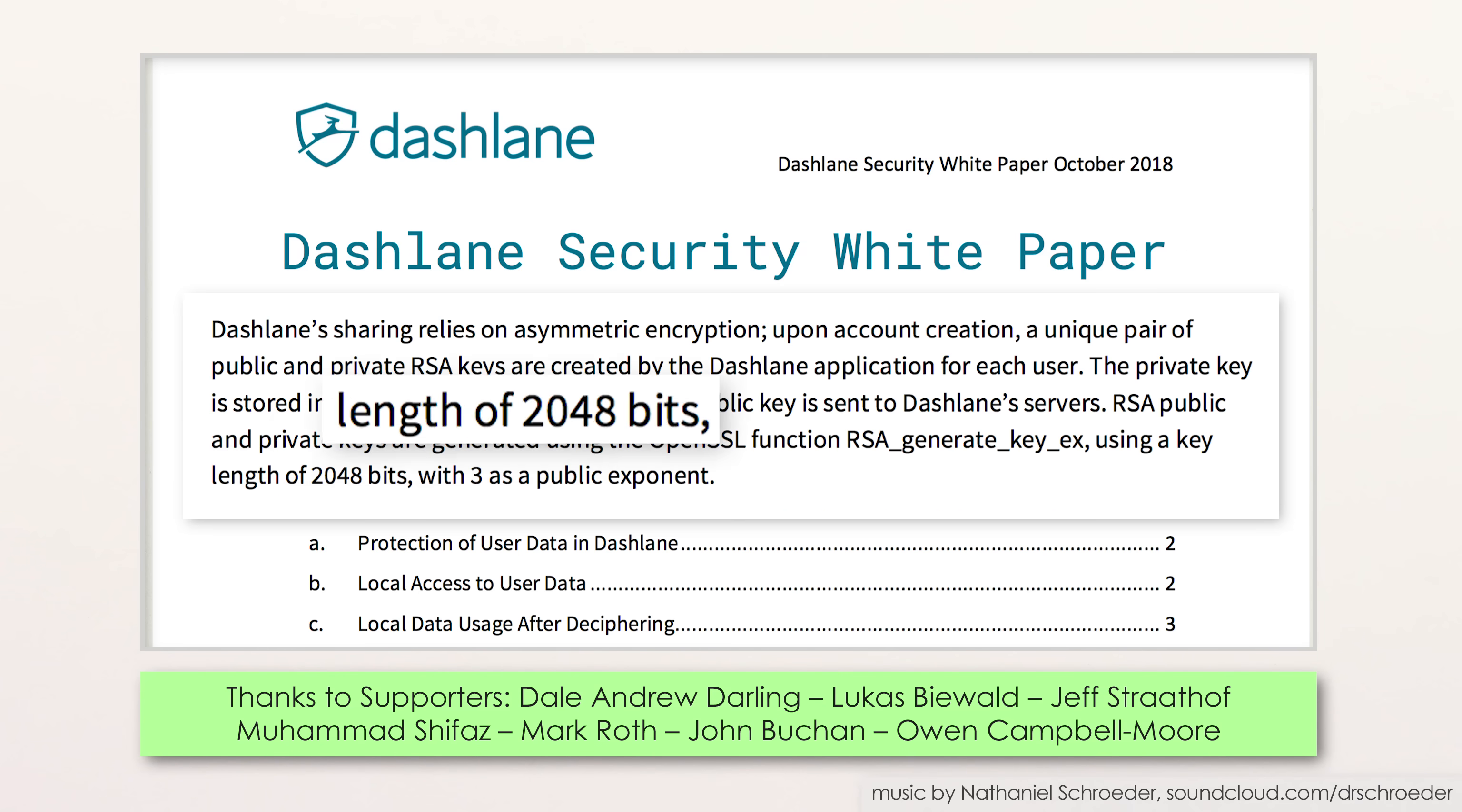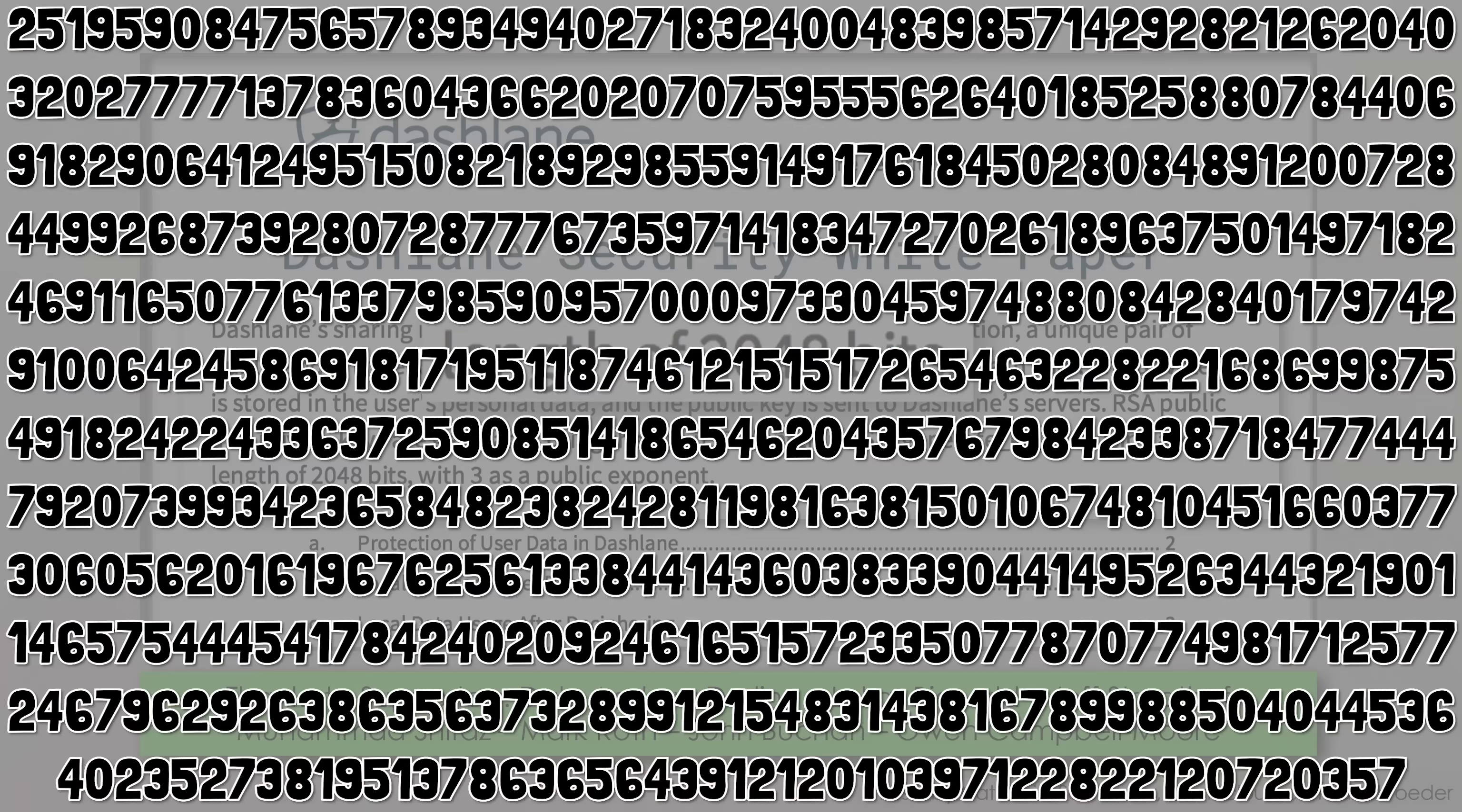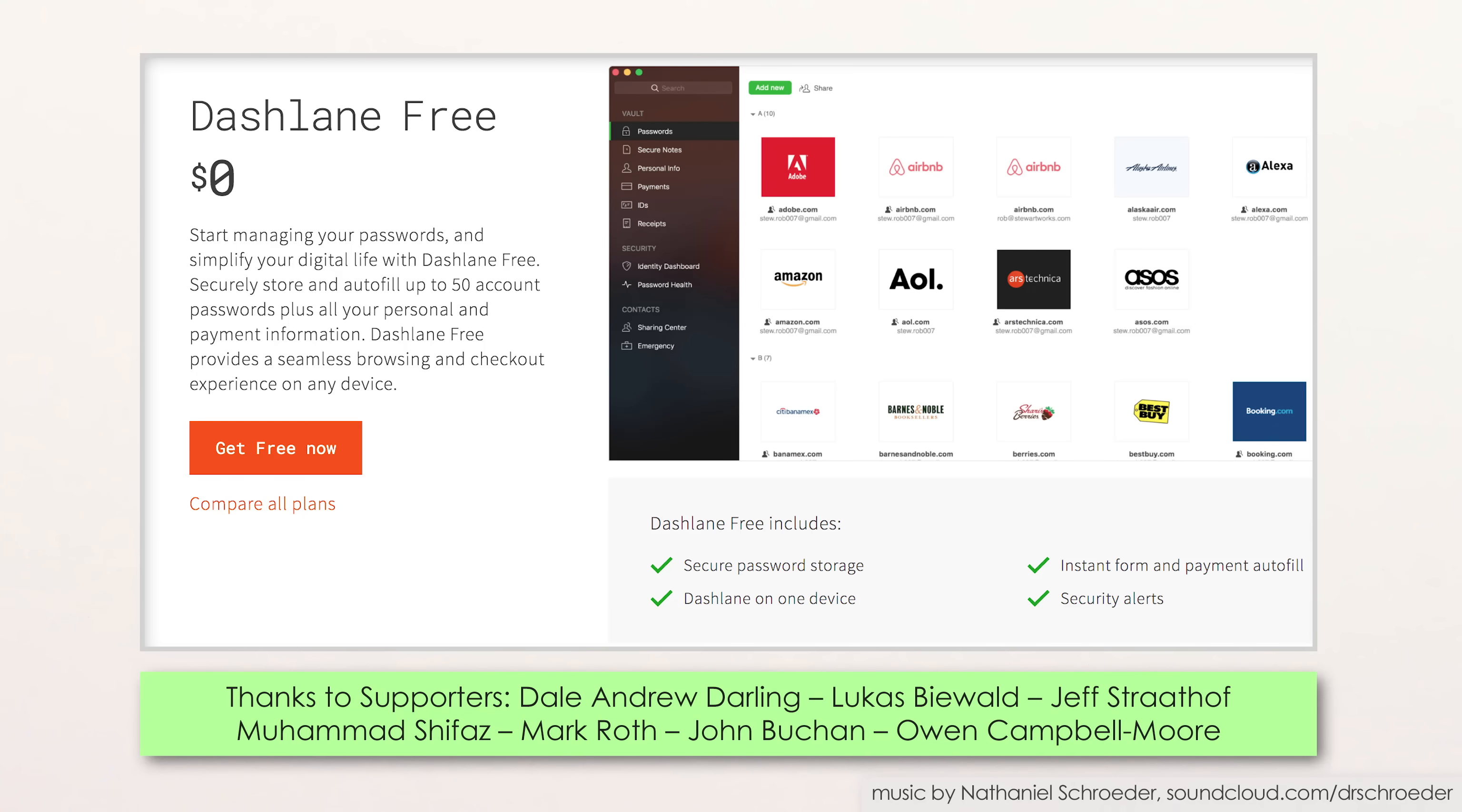Oh, and Dashlane uses 2048-bit numbers for its encryption. Numbers that big are estimated to take a trillion times more effort to factor than any that have so far been factored by brute force. And of course, Dashlane is free for up to 50 passwords for as long as you like, so you have nothing to lose checking it out.